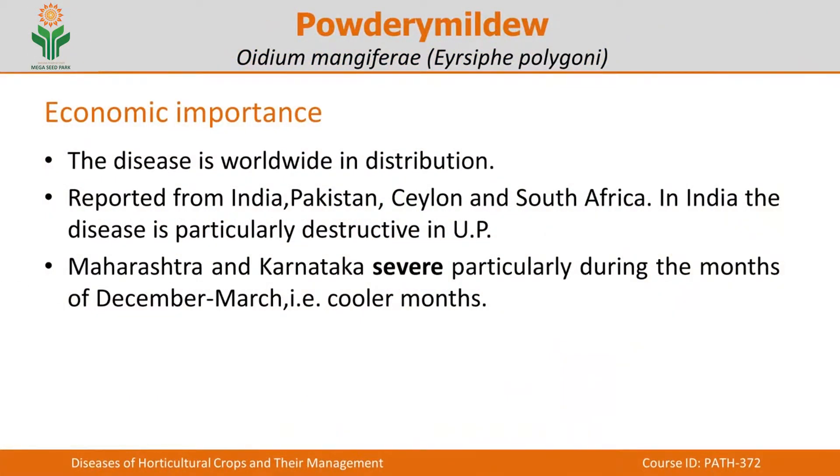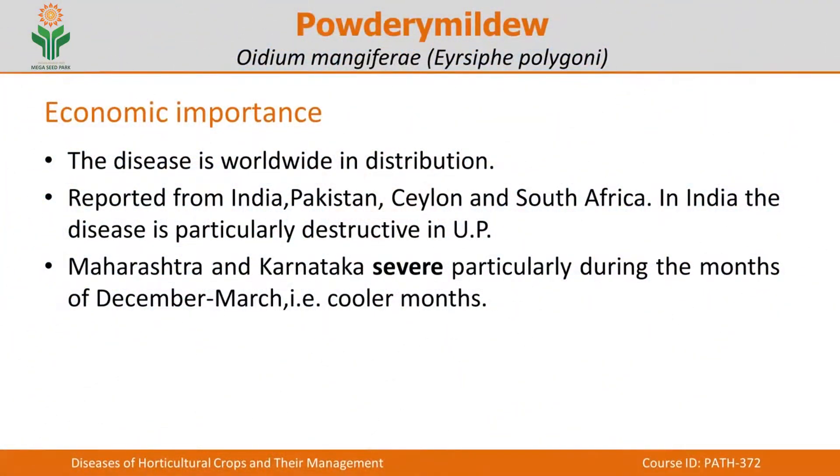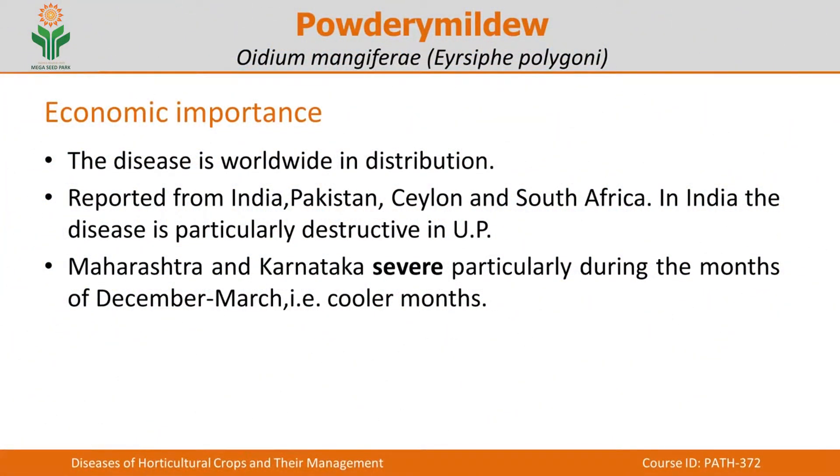In addition to India, it is also reported from Pakistan, Ceylon, and South Africa. In India, Uttar Pradesh, Maharashtra, and Karnataka have very high incidence of this powdery mildew disease. In Maharashtra and Karnataka, the disease is generally observed during the cooler months, between December and March.